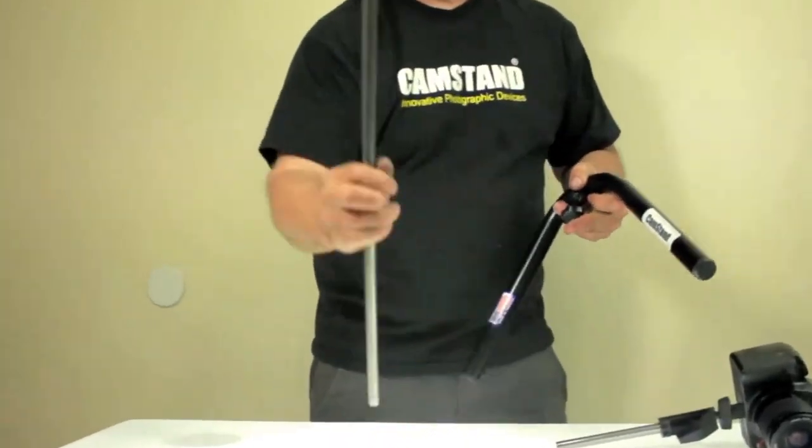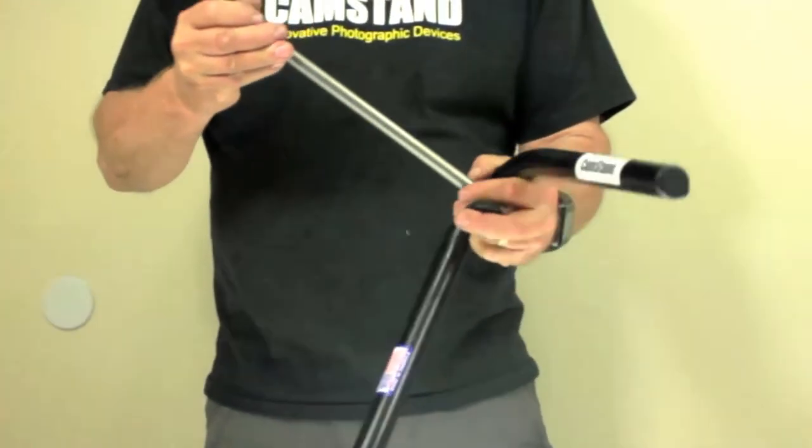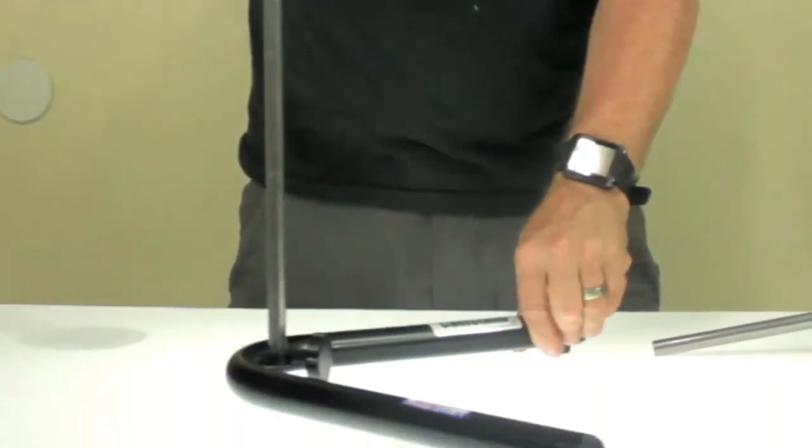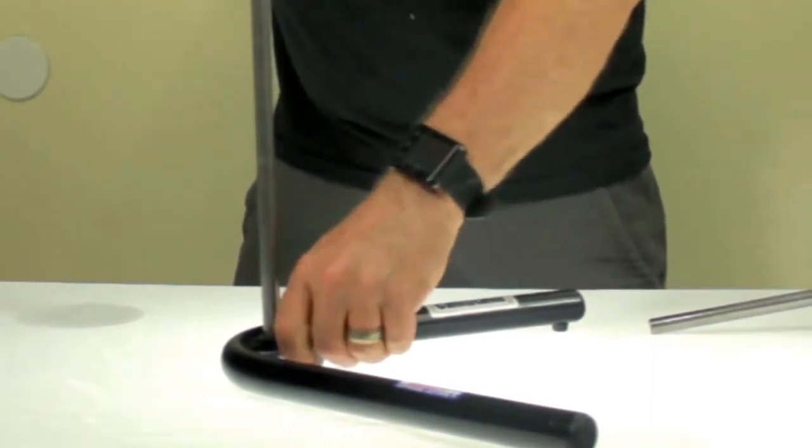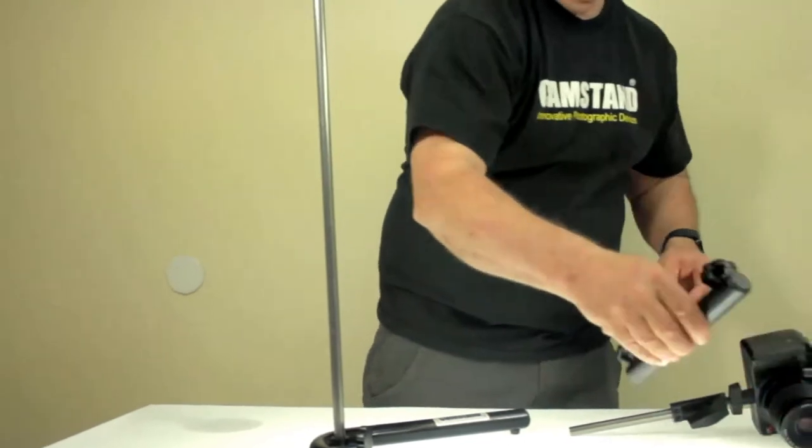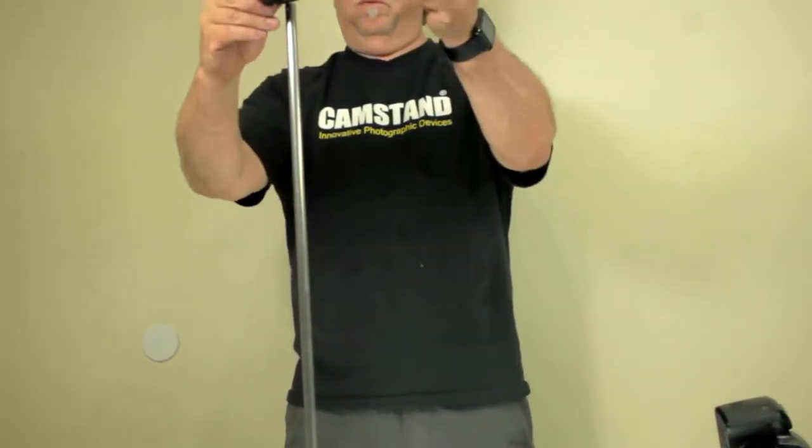Hand tighten the vertical post into the base. Clamp the camera mount to the vertical post.